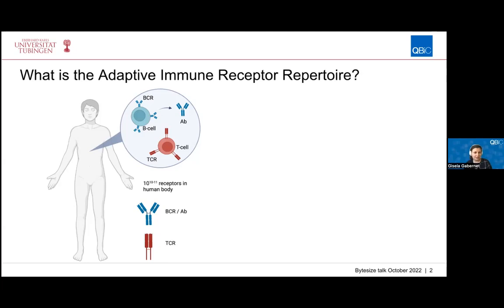BCRs or B cell receptors in their secreted form are also called antibodies, which is a term that we are all more familiar with. The main function of these receptors is to be able to recognize foreign antigens inside the human body that can come from pathogens such as viruses or bacteria, and to elicit an immune response against them.